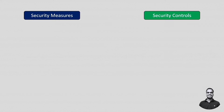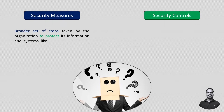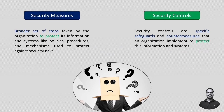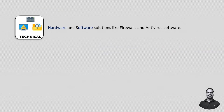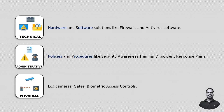Don't confuse security controls with security measures — both terms are often used interchangeably. Security measures are the broader set of steps an organization takes to protect its information, including policies, procedures, and mechanisms. Security controls are the specific safeguards and countermeasures implemented to protect information systems. Technical measures include hardware and software solutions like firewalls and antivirus. Administrative measures include policies like security awareness training and incident response plans. Physical measures include cameras, gates, and biometric access controls. By combining these, organizations can protect assets and respond effectively to security breaches.